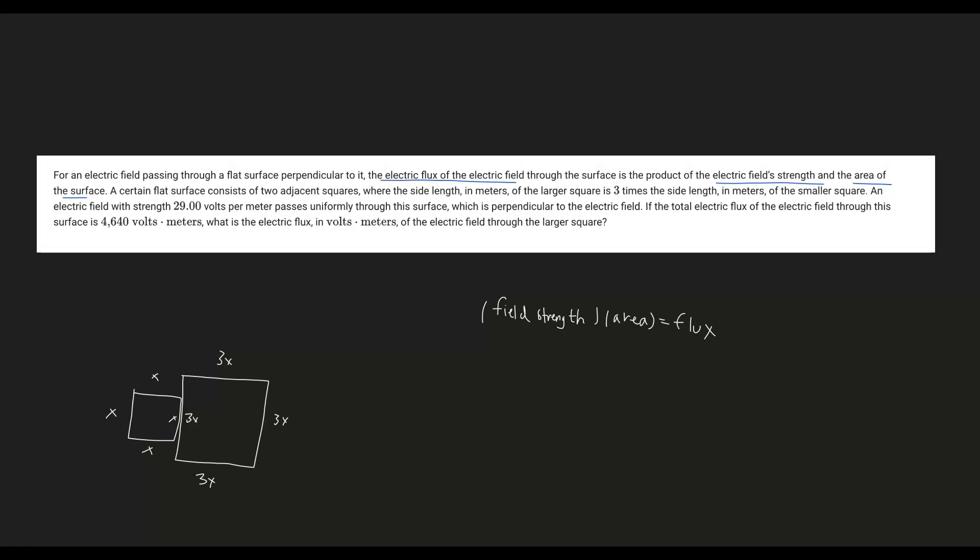You can see they've given us the electric field strength, which they say is 29 volts per meter. So 29 is going to be our electric field strength. Now the thing with the area is we don't know what it is, but we can solve for it because they've given us the total flux that affects both the small and large square.